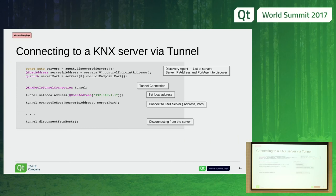Then here we see how to establish this data connection. We get the information about the server from the agent, retrieve the list of servers, and take the first one since there was only one in our case. We get the server IP address and port. Then we declare a tunnel connection — this is the data connection. Within this connection we set the local address and then connect to the host, which is the server we chose. Then we can send frames that will reach the devices and do stuff in our network. Once we're done, we just disconnect from the host.